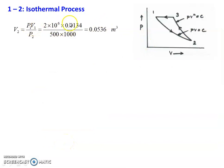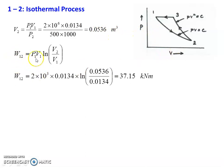For the first process, isothermal expansion: V2 equal to P1V1 by P2 equal to 2 into 10⁶ into 0.0134 divided by 500 into 10³ equal to 0.053 m³. Work done W12 equal to P1V1 into ln(V2 by V1) equal to 2 into 10³ into 0.0134 into ln(0.053 by 0.0134) equal to 37.15 kilojoules. First process isothermal expansion work done equal to 37.15 kNm.